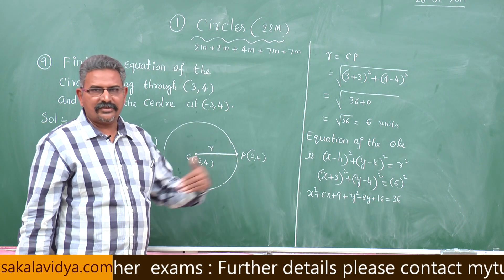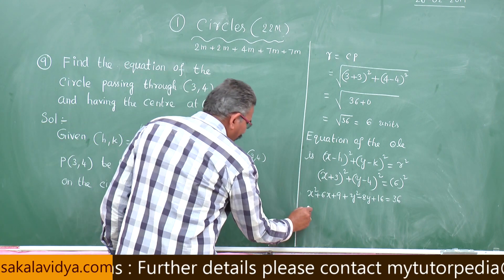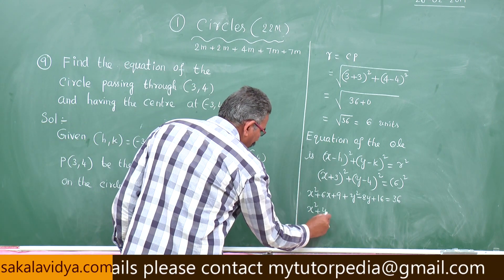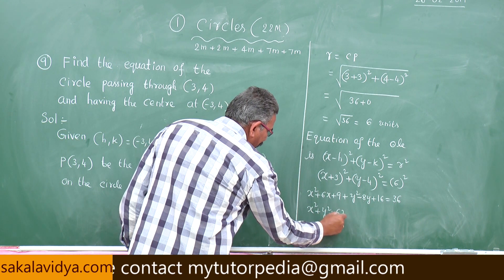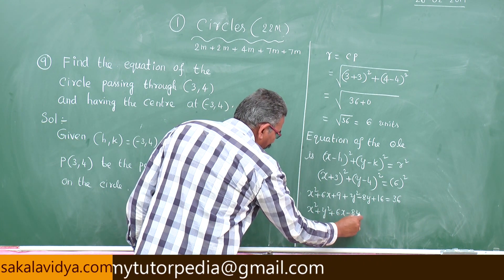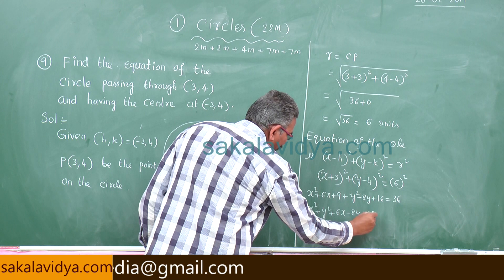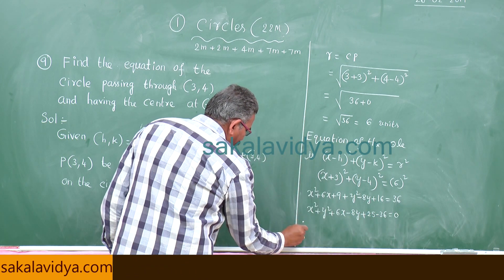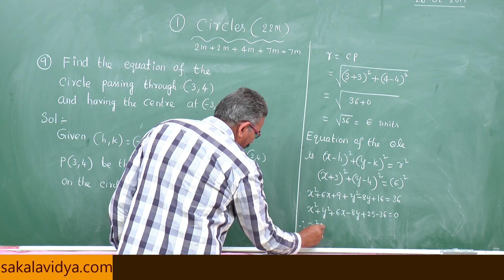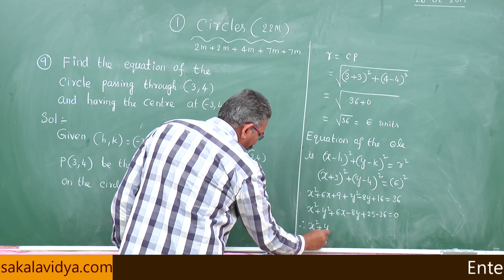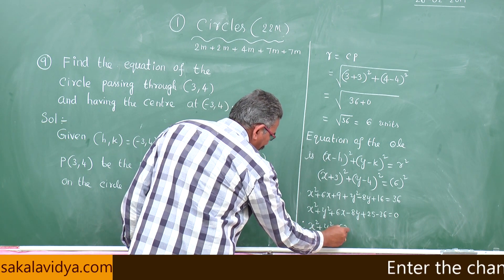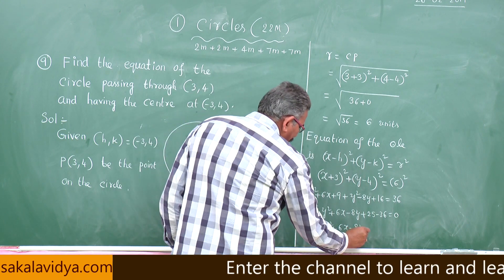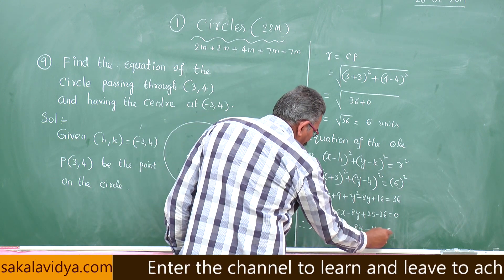Let us rearrange the terms. Rearranging, we get x square plus y square plus 6x minus 8y plus 25 minus 36 equal to 0. Therefore, the equation of the circle is x square plus y square plus 6x minus 8y minus 11 equal to 0.